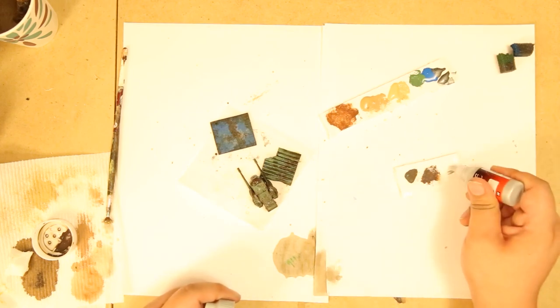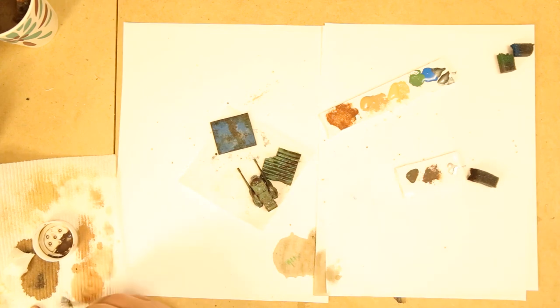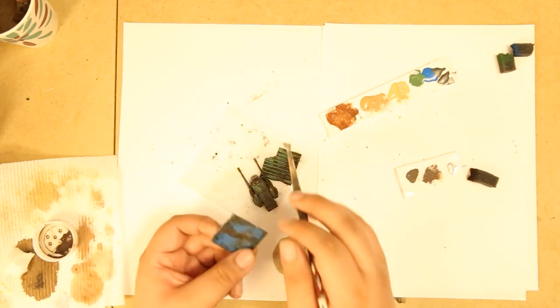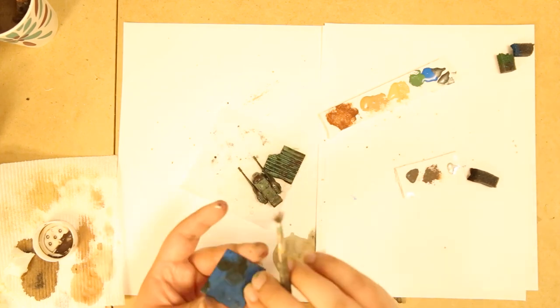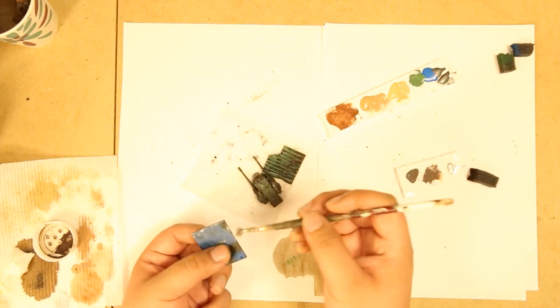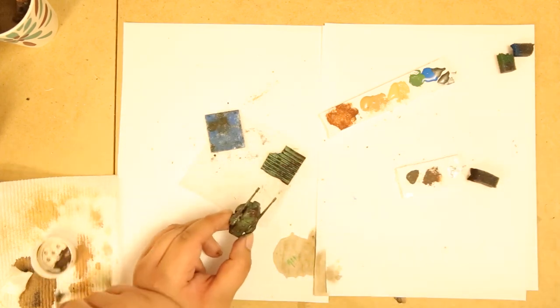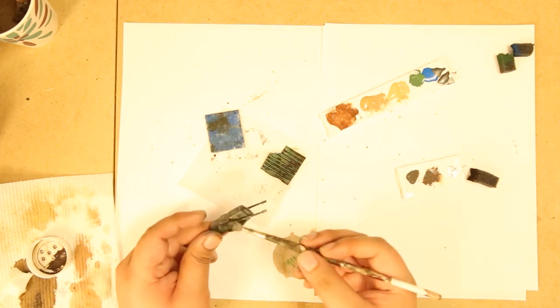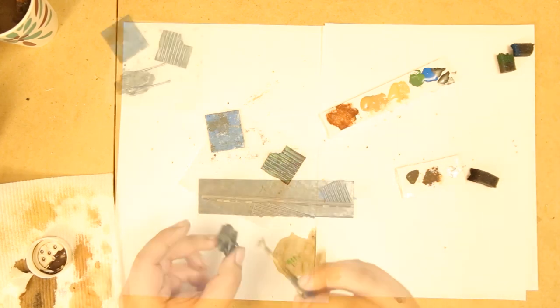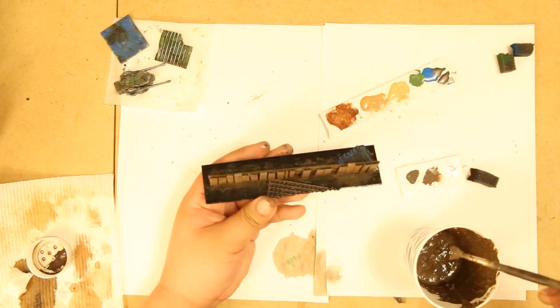Alright. Now to finish off the scrap bits with some silver. I just did a dry brush along the edges of the metal. I also kind of stippled it on the front as well to make it look like it's scratched or something. I did that with all the scrap bits of metal that I have. Okay. Now that we got that done, let's put on our texture paint.